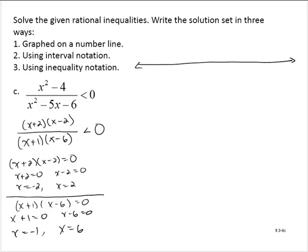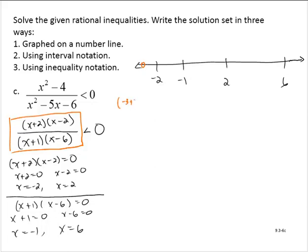Here's our number line with the values in numerical order: negative 2, negative 1, 2, and 6. Testing into the factored form x plus 2 times x minus 2 over x plus 1 times x minus 6. Testing x equals negative 3: negative times negative over negative times negative — four negatives — gives a positive result.